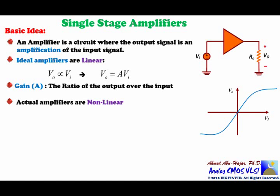We can express this curve using a power series: V_out equals A0 plus A1 times VI plus A2 times VI squared plus A3 times VI cubed, and so on. It is clear from this equation that V_out is not a function of VI only, but also a function of VI squared, VI cubed, VI to the power of 4, and so on. The relationship between the output and the input is therefore nonlinear.